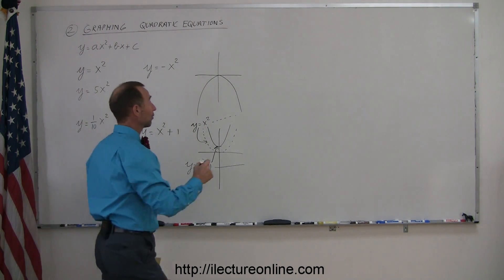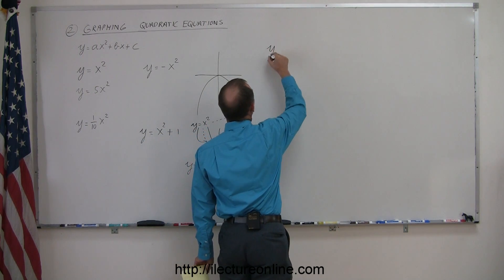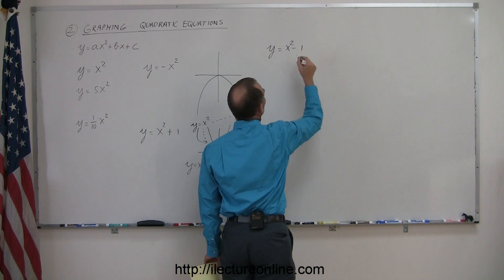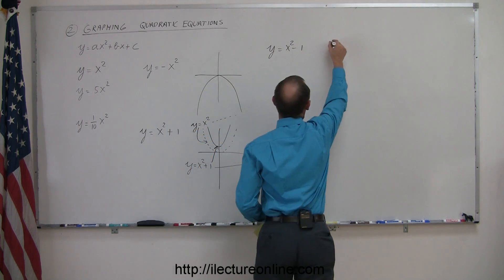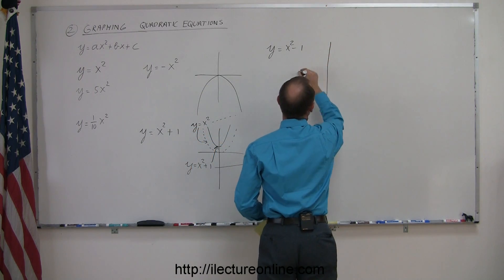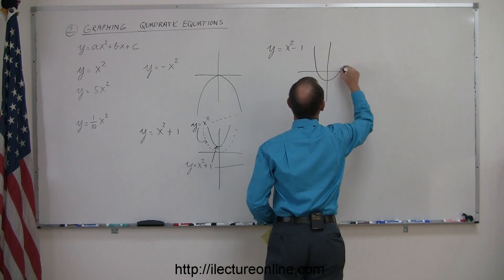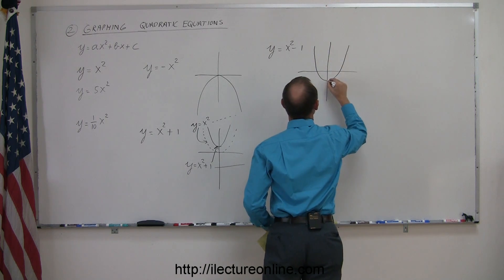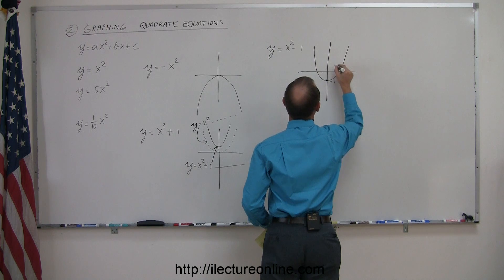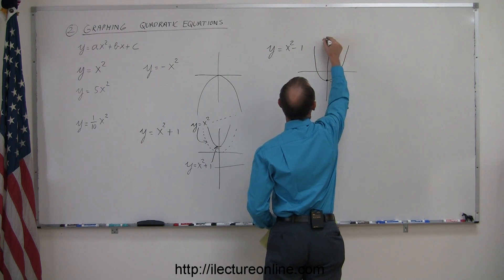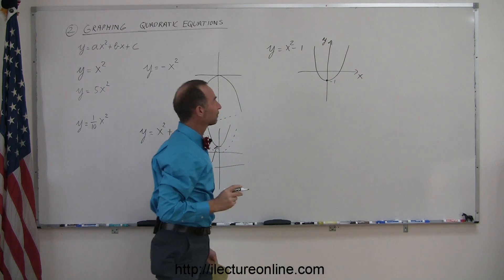It follows that if you write y equals x squared minus one, that would simply lower the whole parabola by one unit. The vertex would be at minus one on the y-axis.